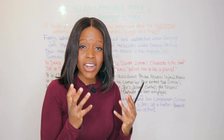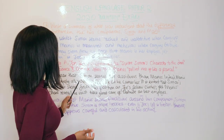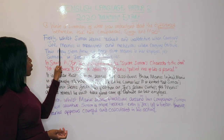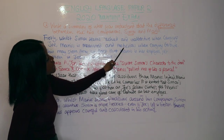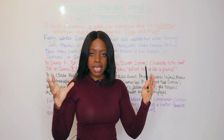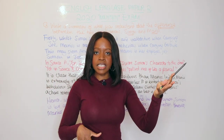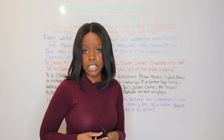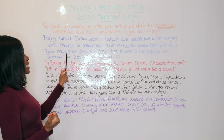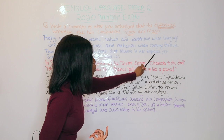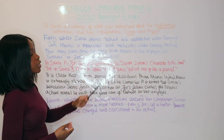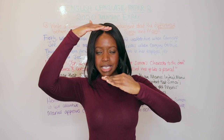You can begin with: 'Firstly, whilst Simon seems rushed and inattentive when carrying Joe, Marius is measured and meticulous when carrying Gertrude.' That's the first sentence of my opening point, establishing the difference between the two companions — one is inattentive, the other careful and meticulous. I also add a second sentence: 'This may stem from the fact that Marius is her employee, yet Simon is Joe's fellow traveler.' So I've separated the point into two parts: directly answering the difference, and then suggesting a possible reason for it.